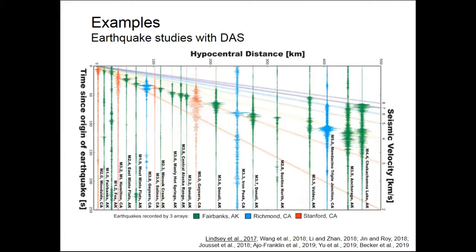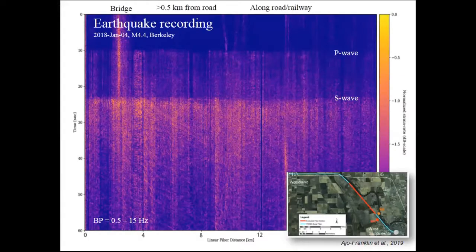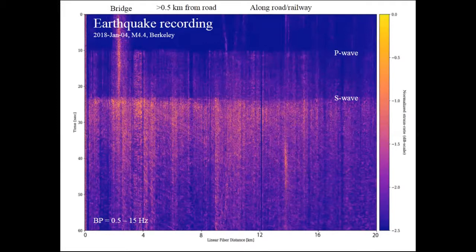We can also record earthquakes. Looking across many arrays, the noise floor is low and instrument sensitivity is good over the relevant frequency band, though instrument response, self-noise, and dynamic range information isn't always available from manufacturers. This is the earthquake data over that same Sacramento cable section — we record the P wave weakly because it's polarized problematically for a horizontal array, then the S wave arriving later. This is from a Berkeley magnitude 4 event from last January. With this array you can, for example, do delay-and-sum beamforming to find where waves are propagating in slowness and back-azimuth.